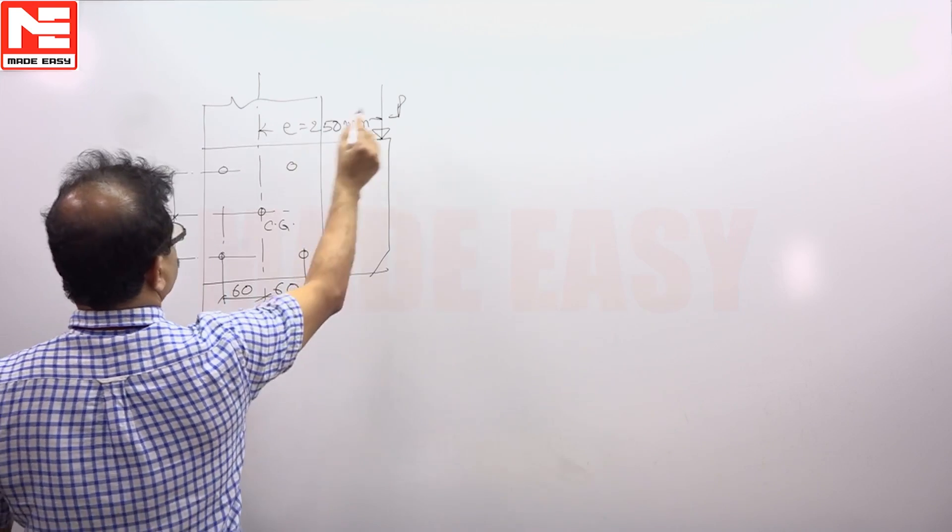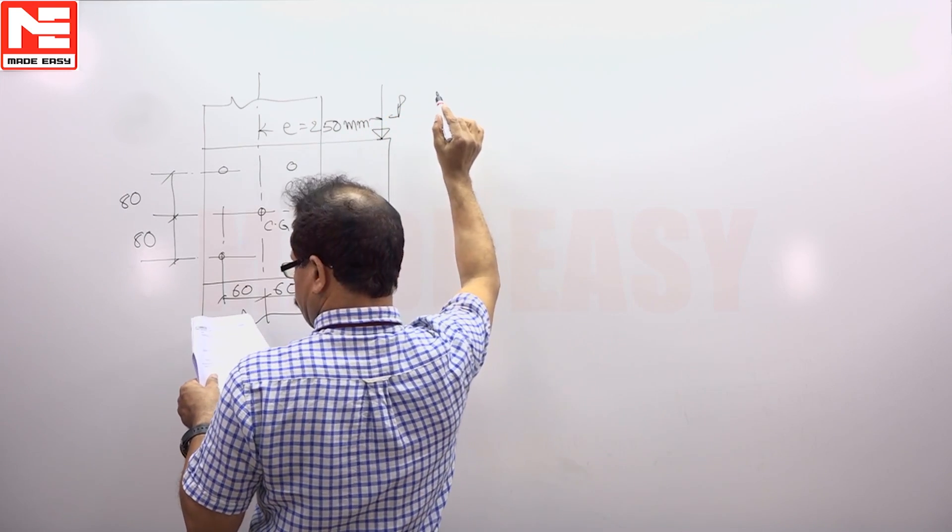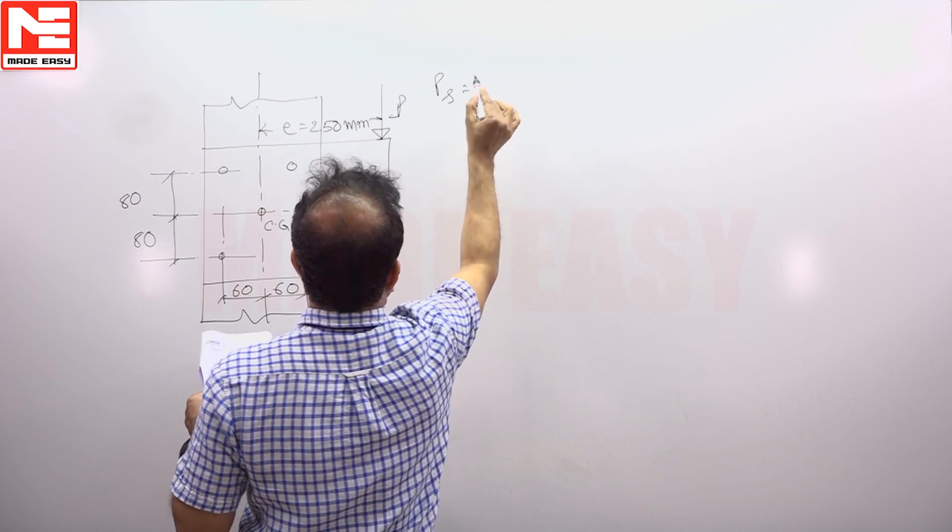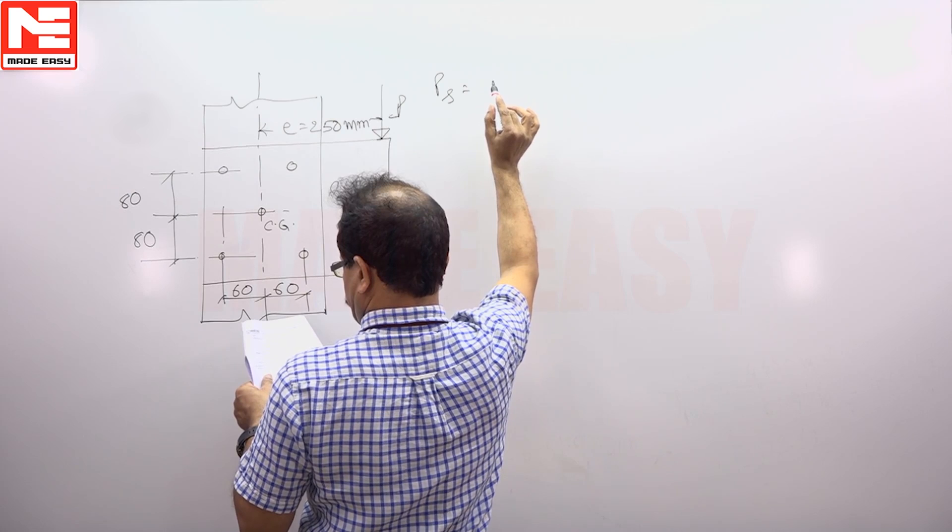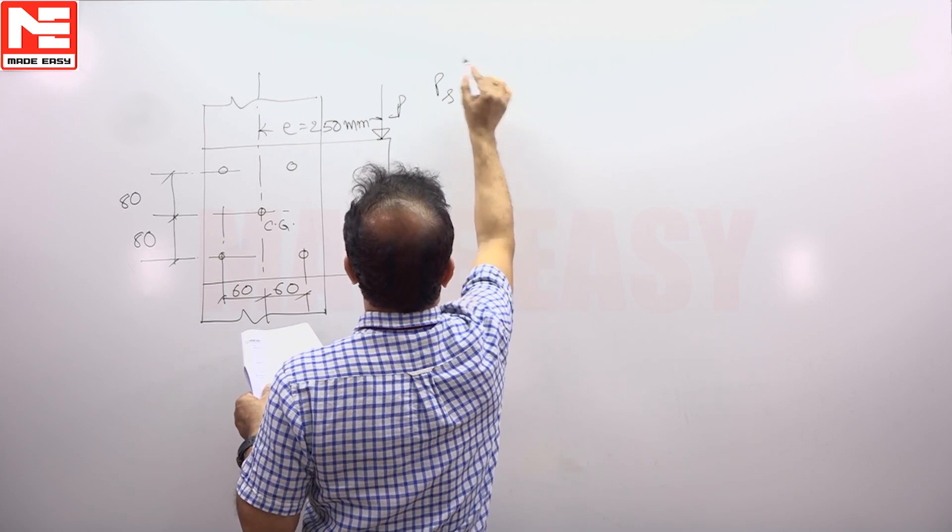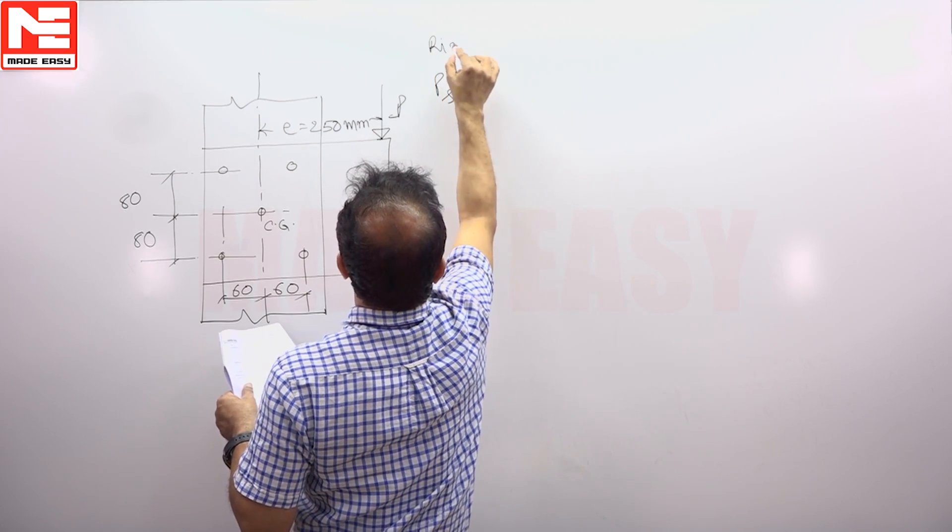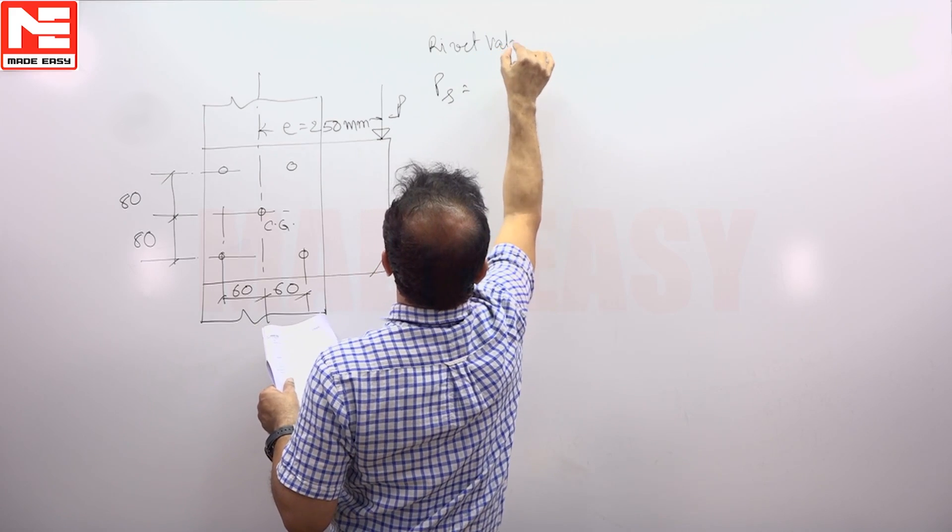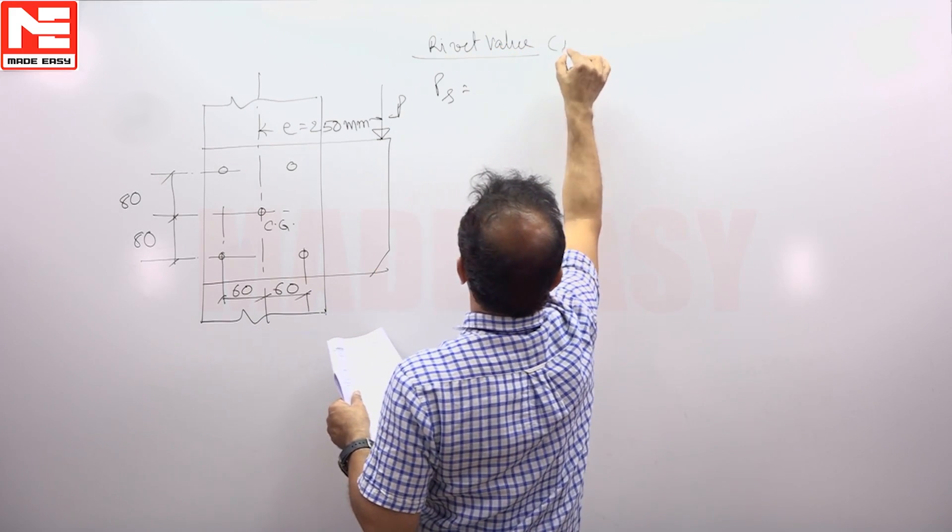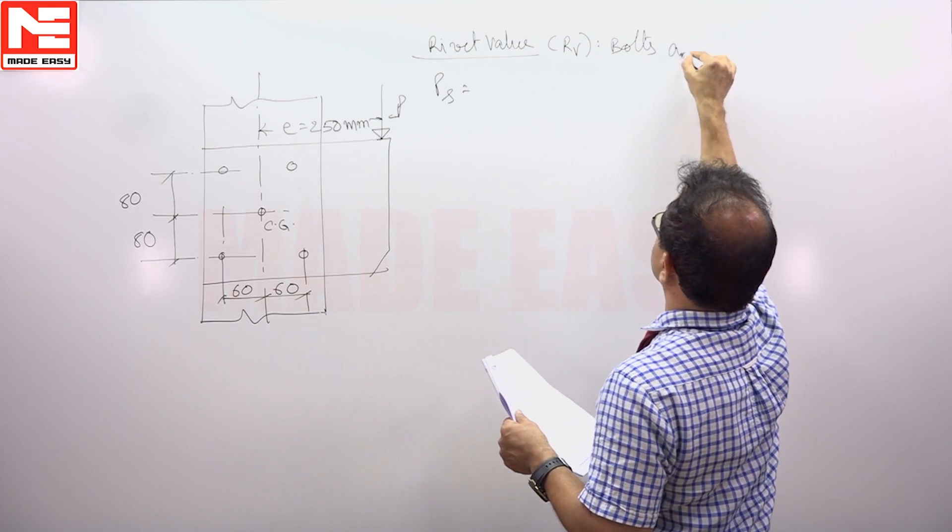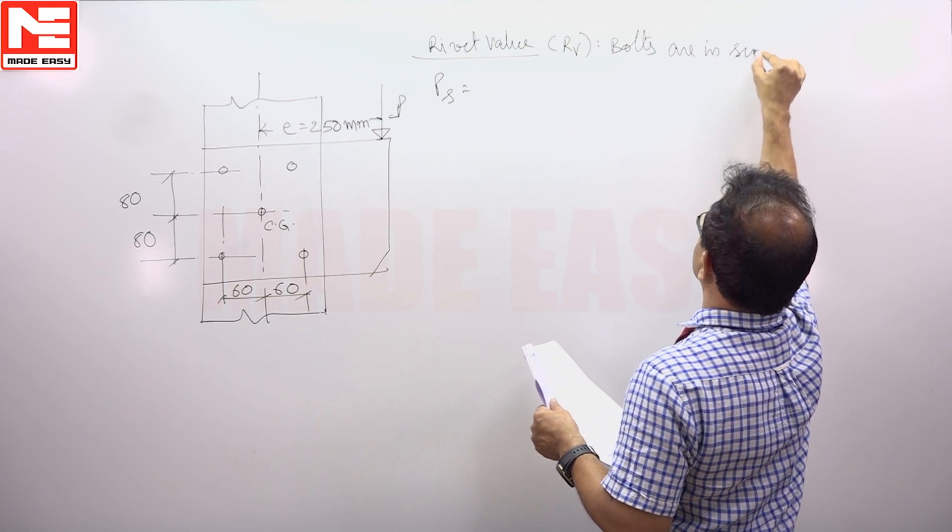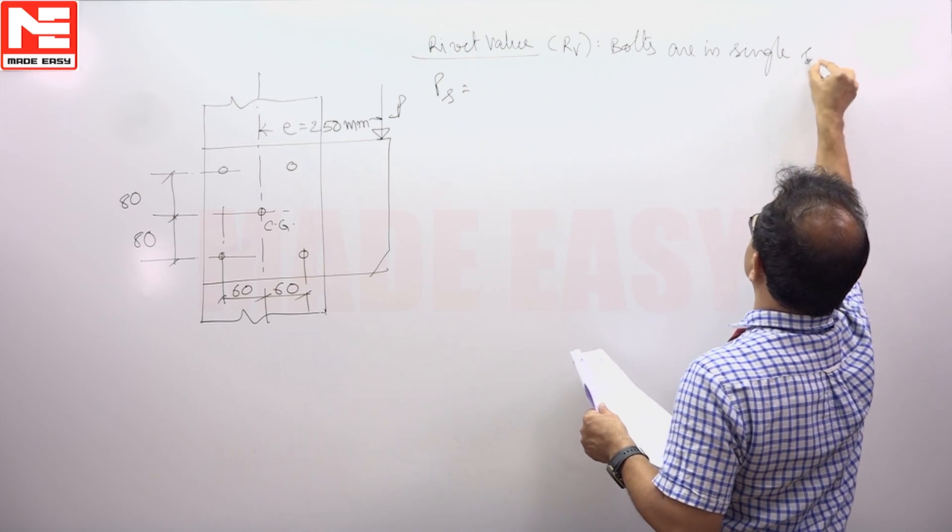Now we will assume that the design strength of bolt Ps. First we will take the rivet value. Bolts are in single shear.